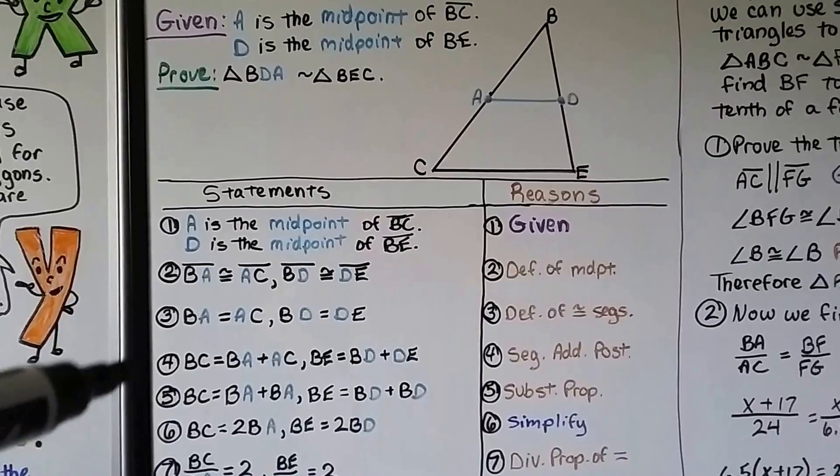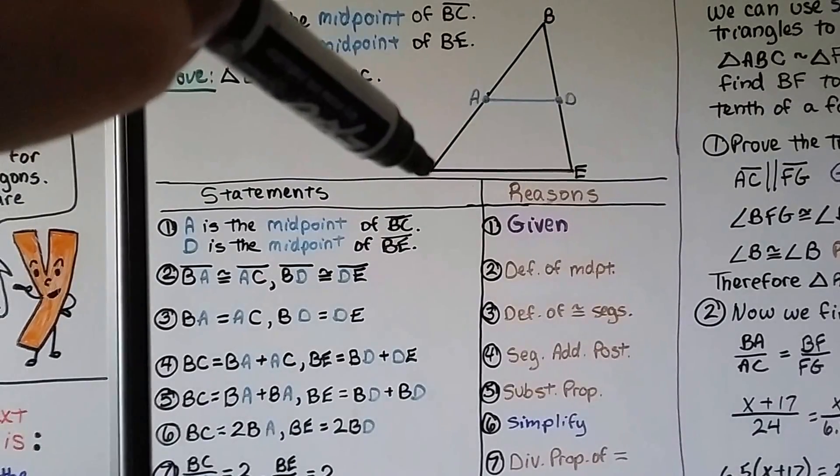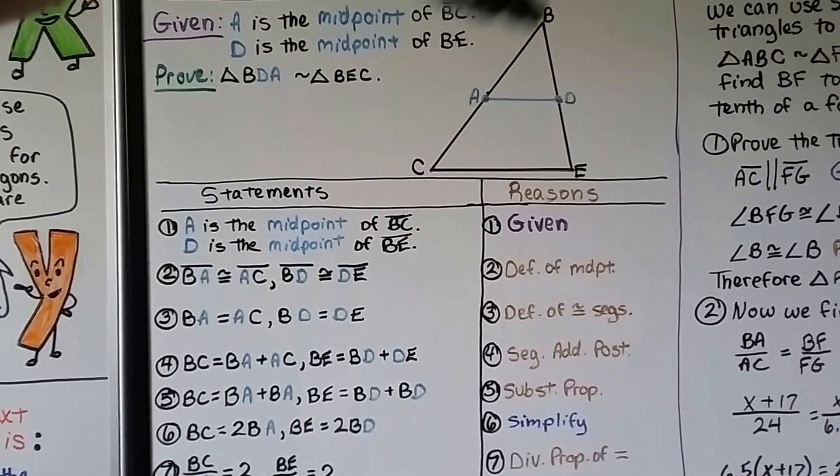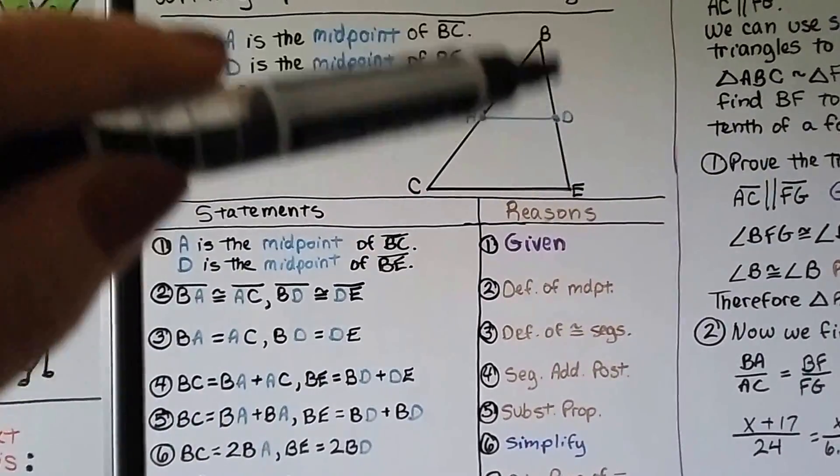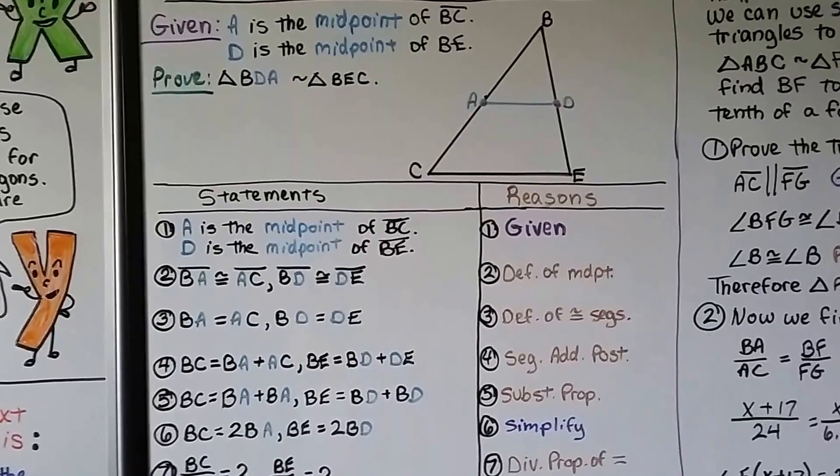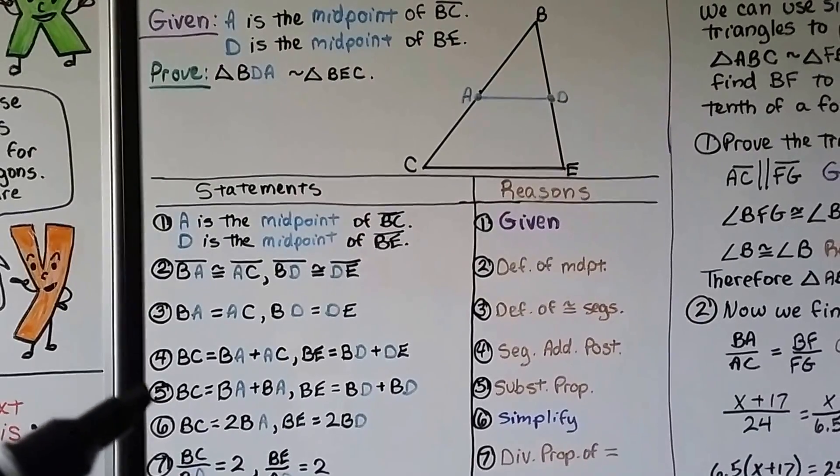So BC for number four, this entire length, is equal to BA plus AC, and BE is equal to BD plus DE. That's the segment addition postulate.